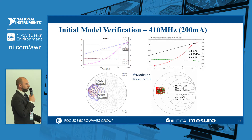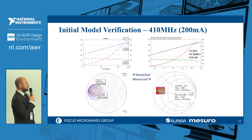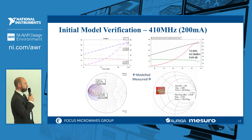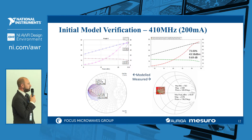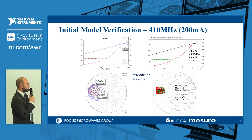For the 200 milliamp bias point, power added efficiency, output power, and gain again fit very well. There is a slight difference in power added efficiency for the higher drive level, but the shape of the curve fits well to measured results. In the impedance space, there is some difference in maximum power added efficiency — around four or five percentage points — but maximum output power fits very well to the measured results.